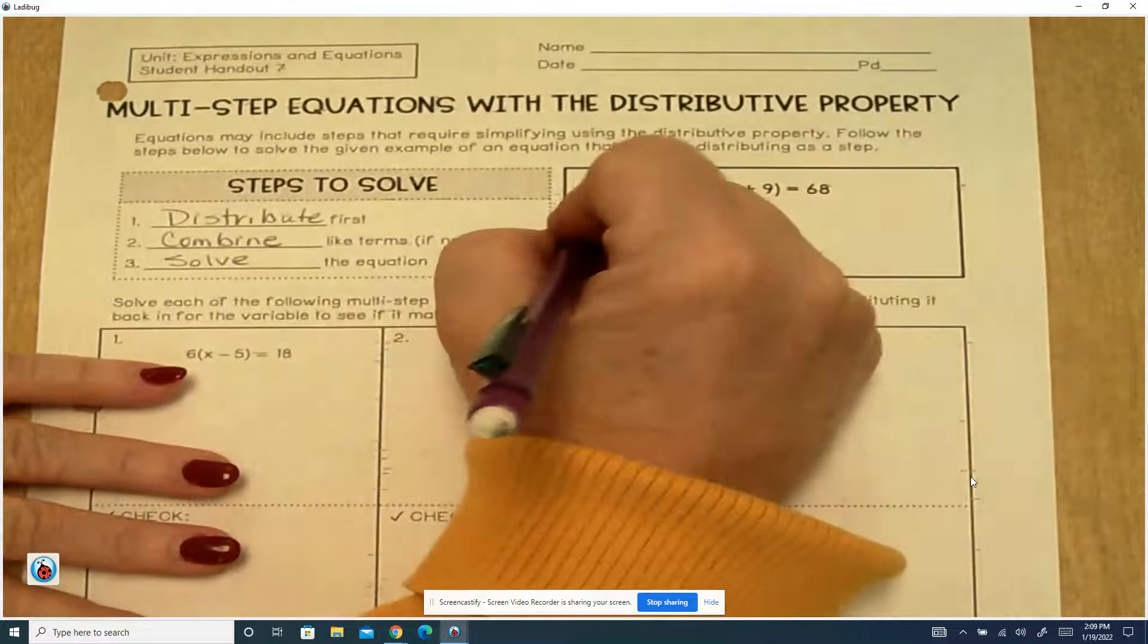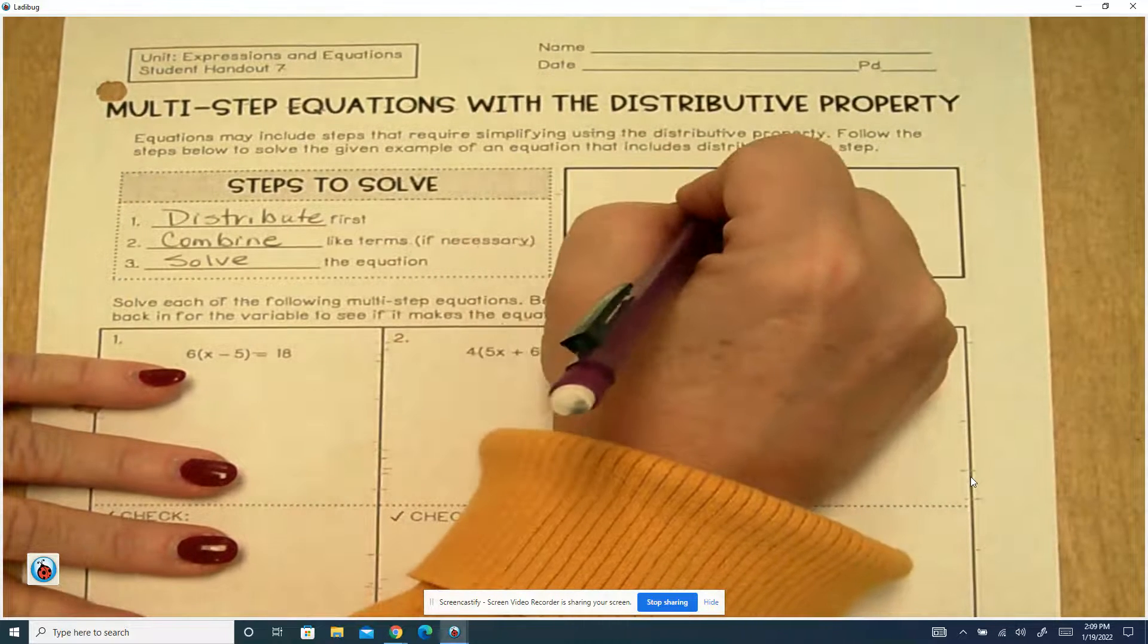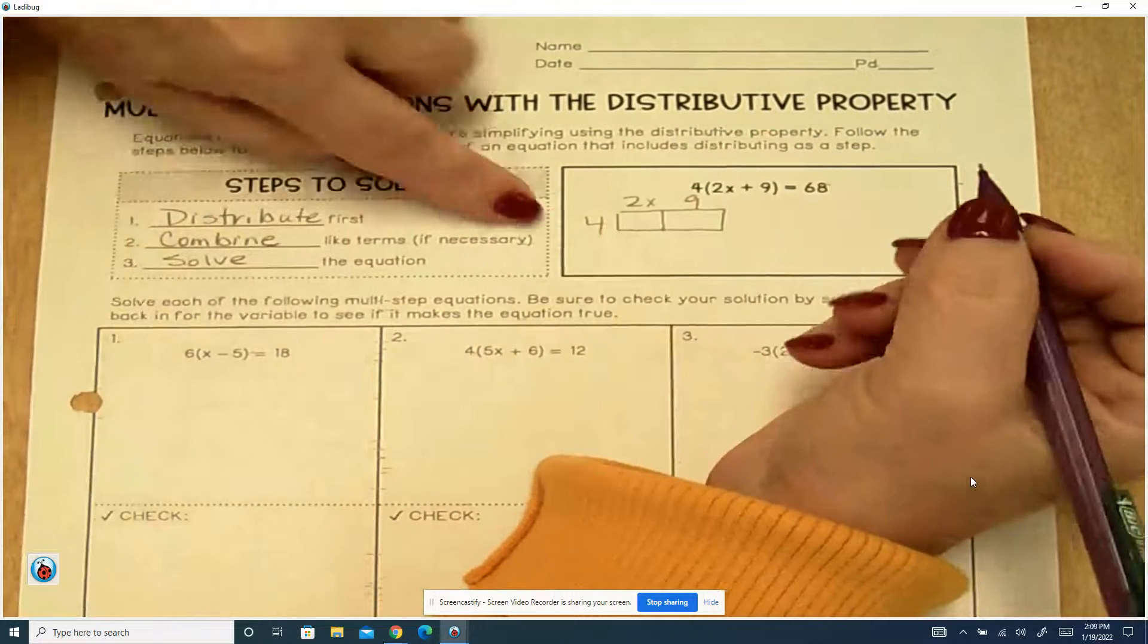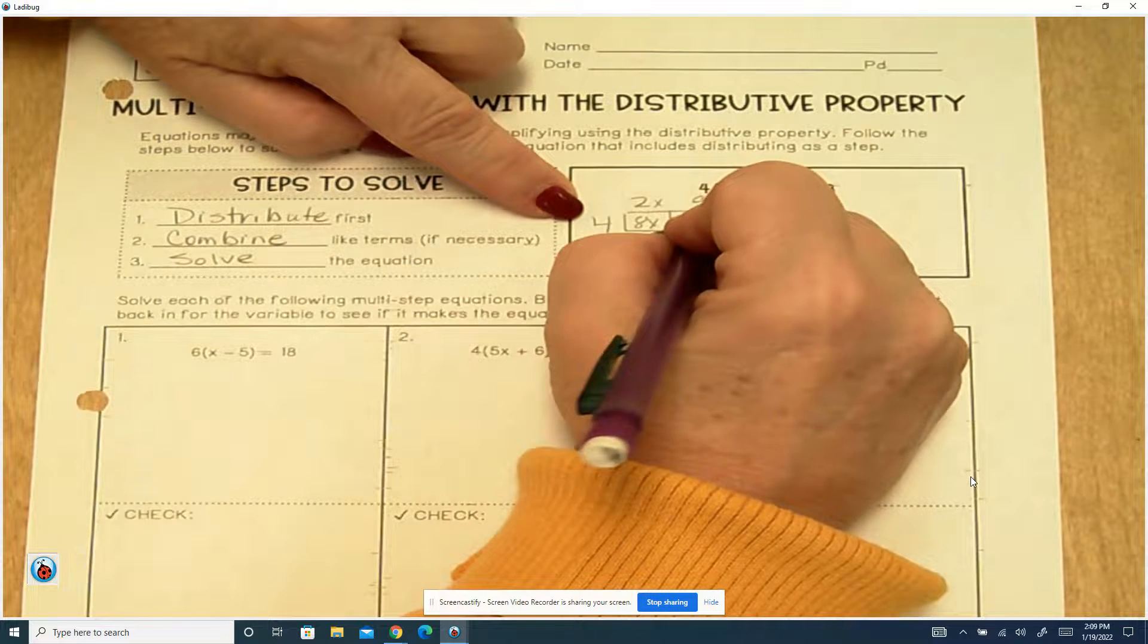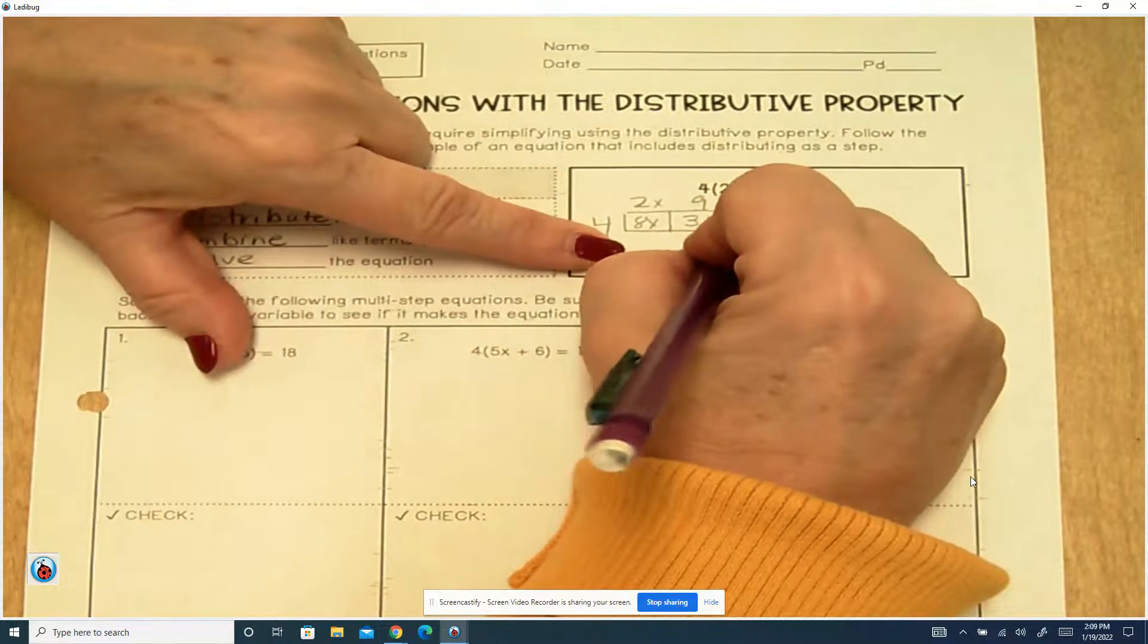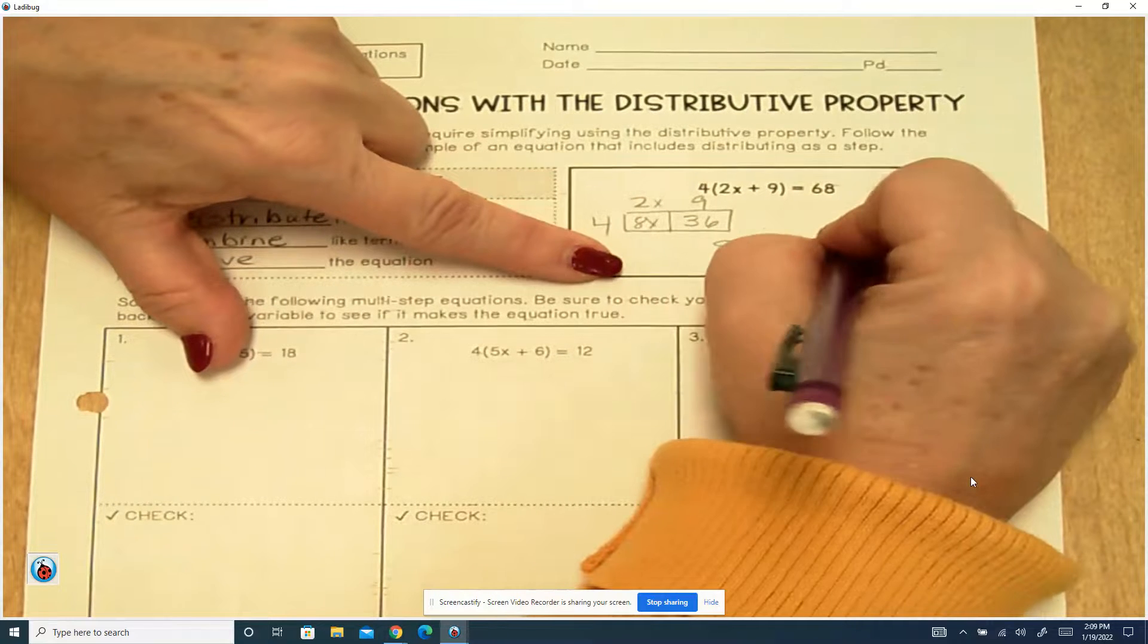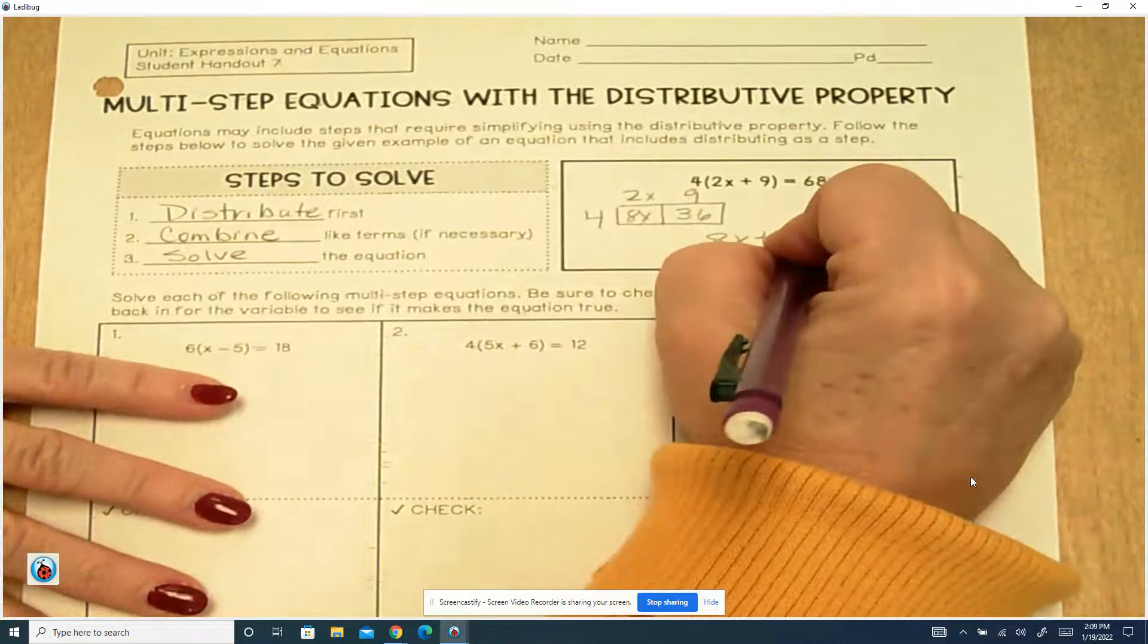So if we come over here and we set up our box that we've used, there's two terms in that parentheses, so we need two boxes. 4 times 2 is 8, so we have 8x, and 4 times 9 is 36. So bring everything down. 8x plus 36 equals 68, and then we can solve the equation.